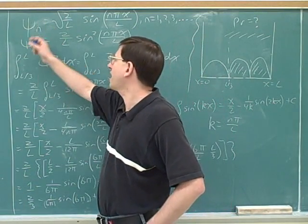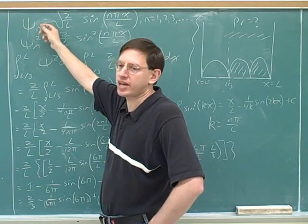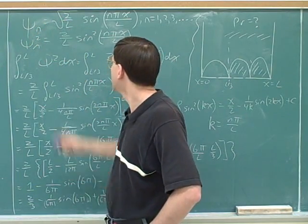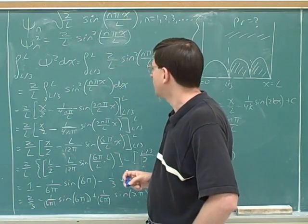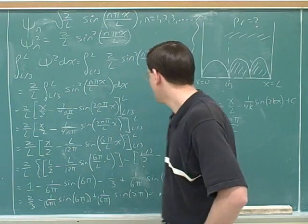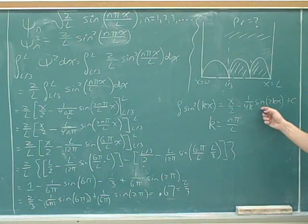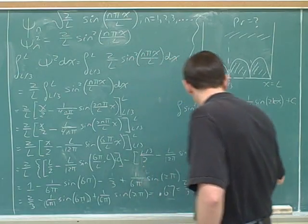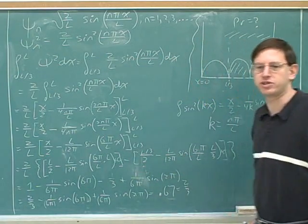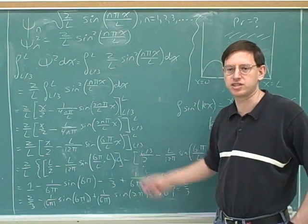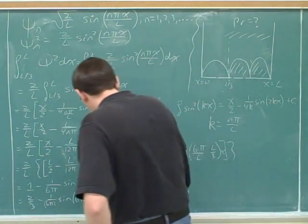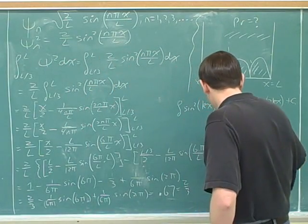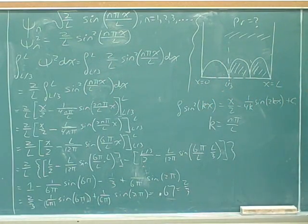It's a probability, so we have to take psi and square it. We got the psi function from the textbook — the textbook gives us the function for an infinite well. Then you square it and take the integral to find the probability. Remember that you can take constants out of integrals, and we used the formula given for taking this integral. You can see why it doesn't help to include the constant of integration: if you had put in the constant here and here and then done the subtraction, the constants would just cancel anyway. When taking a definite integral, there's no point including the constant of integration because it cancels out.